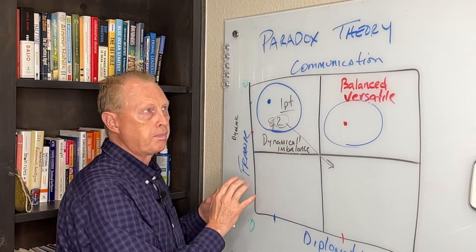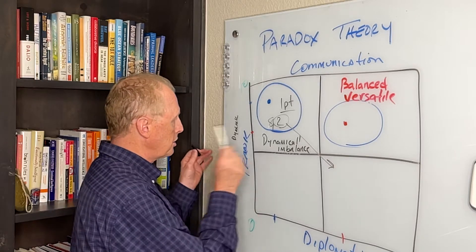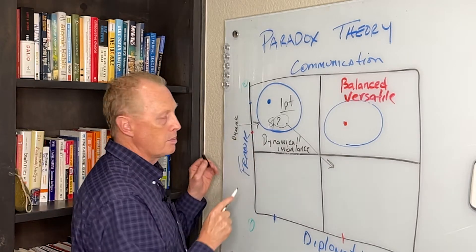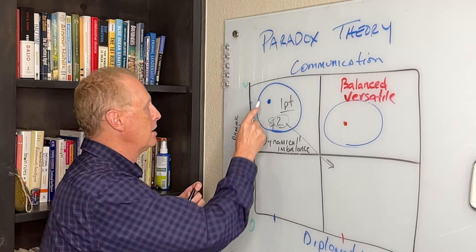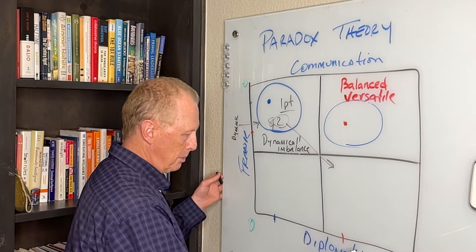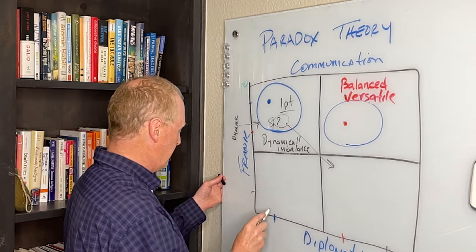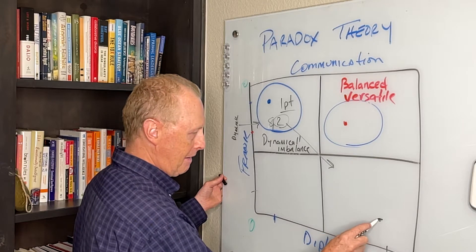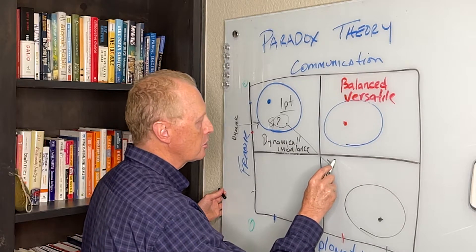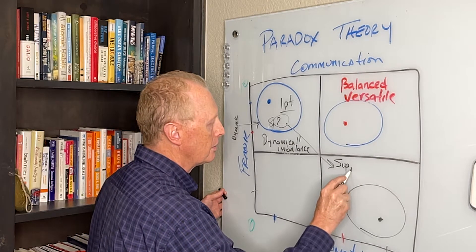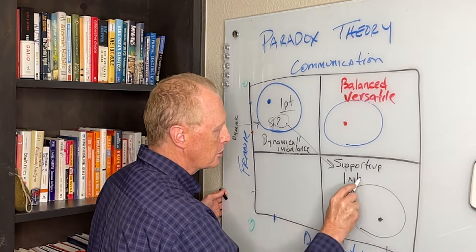So it's a very dynamic activity, but in this particular case because we're imbalanced with the frank, we're not going to be healthy down in here. Now, the next part is what if we're the opposite? What if we're an 8 on diplomatic and we're only a 2 on frank and now a range of behavior is going to be down here? This is called supportive imbalance.